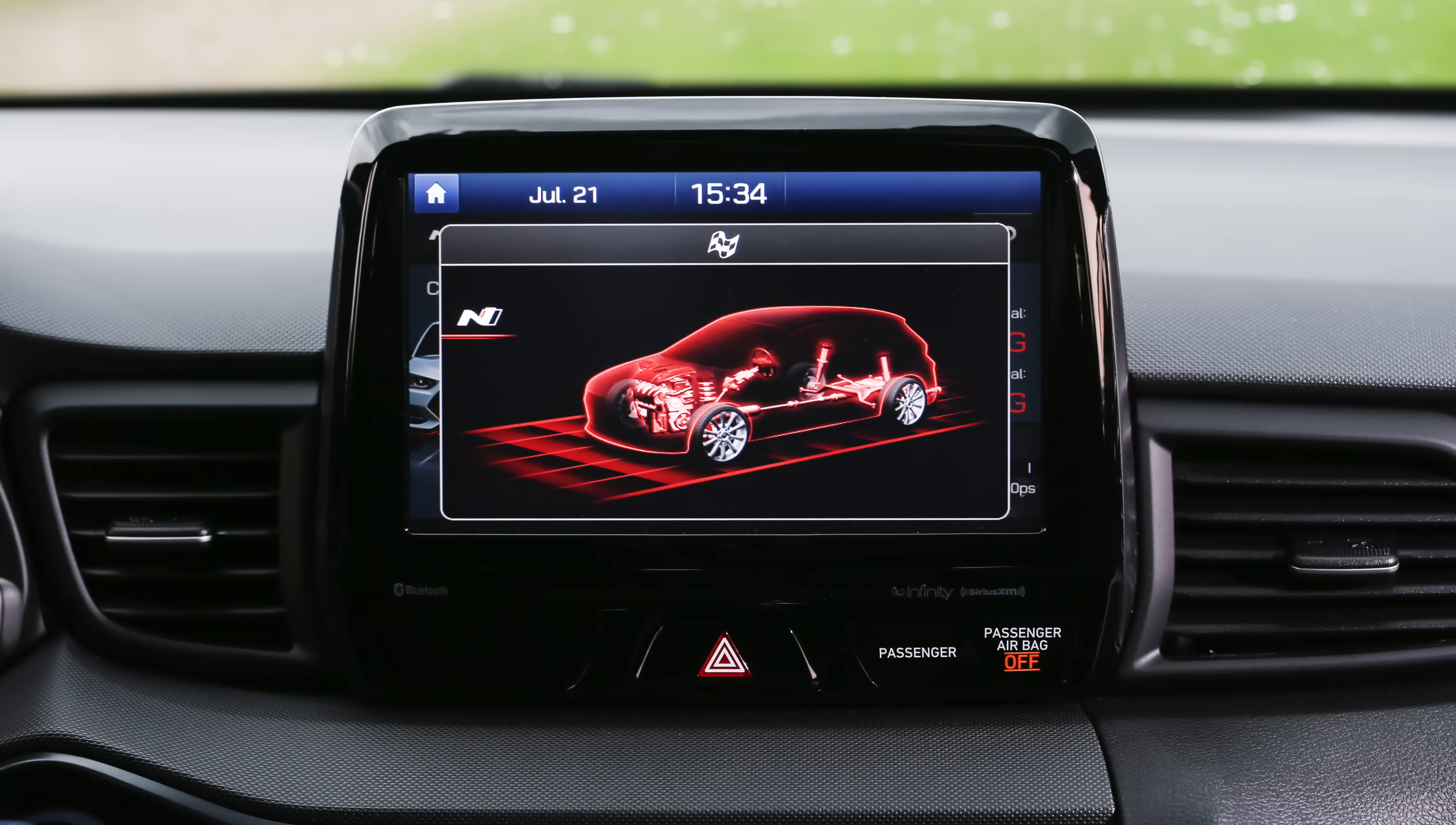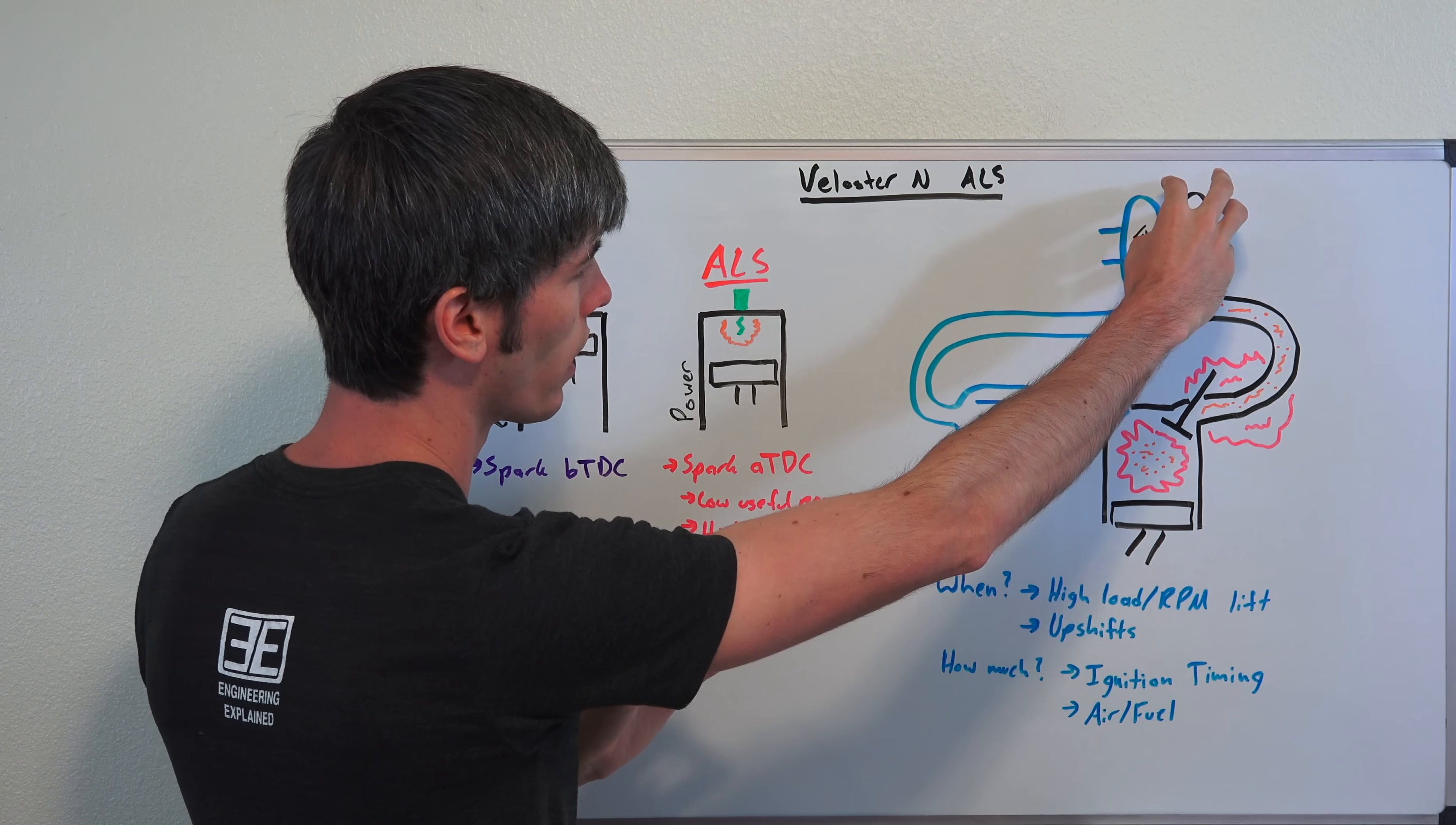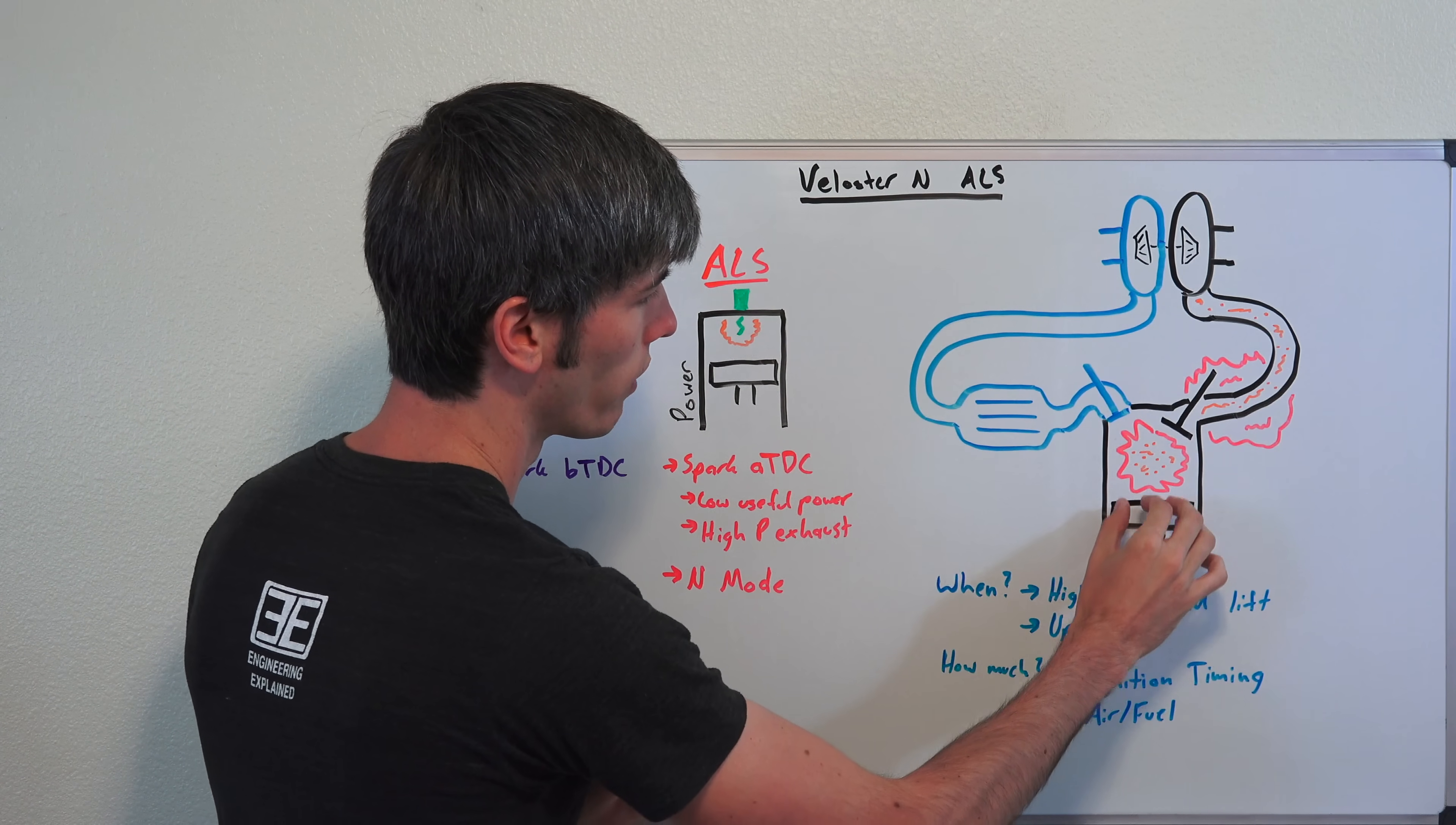Here we have the drawing of a simplified version of what this looks like. You've got your turbocharger, you're going to be pulling in air here through the intercooler, then it comes into the combustion chamber. You have that piston moving up and down.